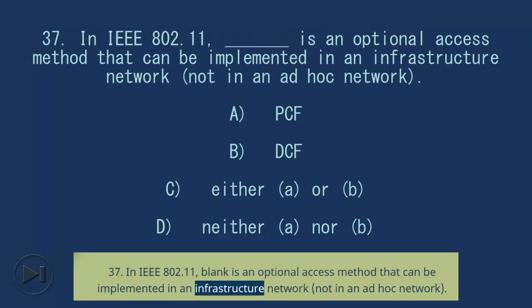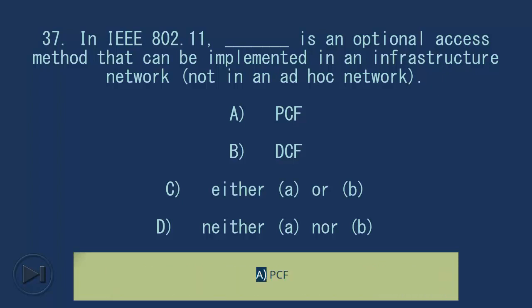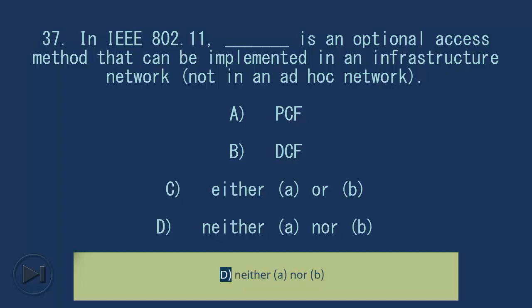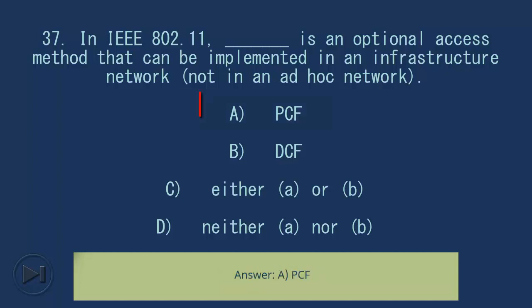Question 37: blank is an optional access method that can be implemented in an infrastructure network, not in an ad-hoc network. A. PCF, B. DCF, C. Either A or B, D. Neither A nor B. Answer: A. PCF.